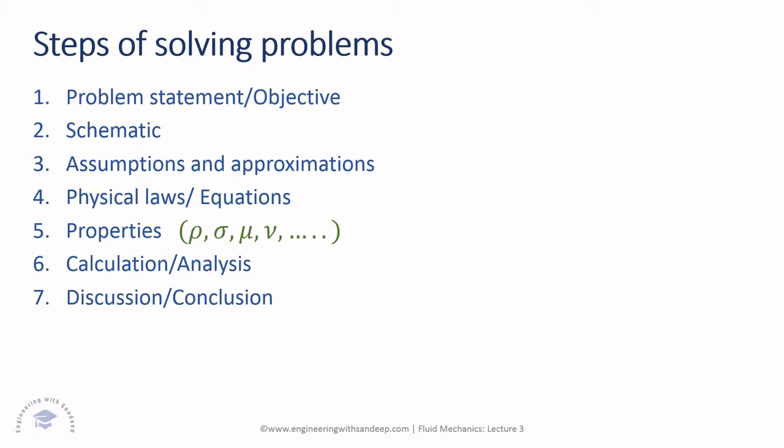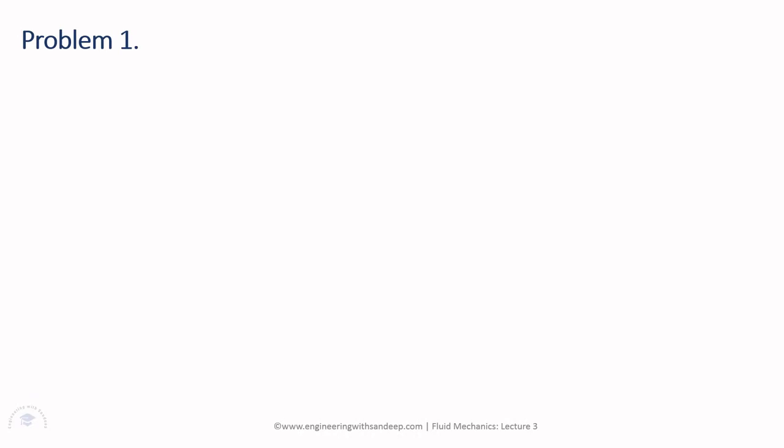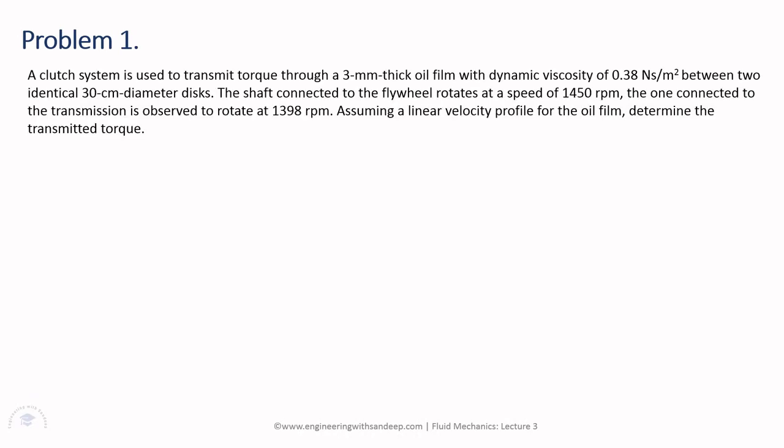Let's apply it by solving a real problem. A clutch system is used to transmit torque through a 3 mm thick oil film with dynamic viscosity of 0.38 Ns/m² between two identical 30 cm disks. The shaft connected to the flywheel rotates at 1450 rpm; the one connected to the transmission rotates at 1398 rpm. Assuming a linear velocity profile, determine the transmitted torque.